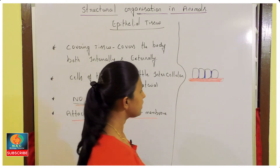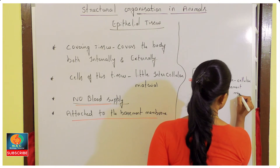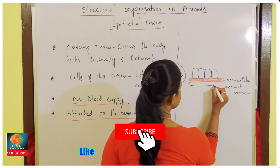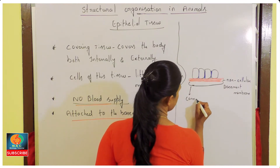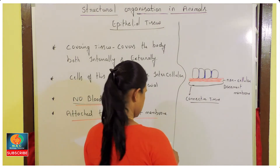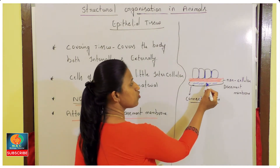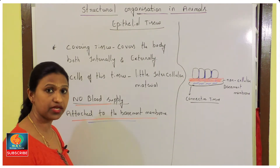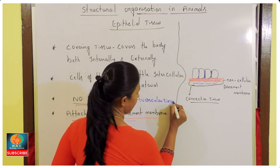All epithelial cells are attached to a non-cellular basement membrane. Below this basement membrane there is a connective tissue which is supplied by blood vessels. These blood vessels supply oxygen and glucose through the basement membrane to the epithelial cells. They are avascular — no direct blood supply.